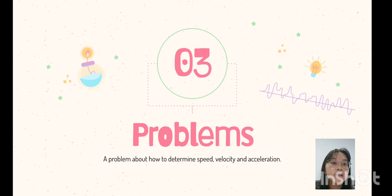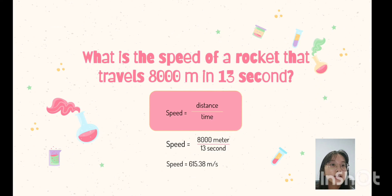Now I will continue to a problem about how to determine speed, velocity and acceleration. First question, what is the speed of a rocket that travels 8000 meters in 13 seconds? So, we use the speed formula, distance over time. The distance is 8000 meters while the time is 13 seconds. So, the answer is 615.38 meters per second.